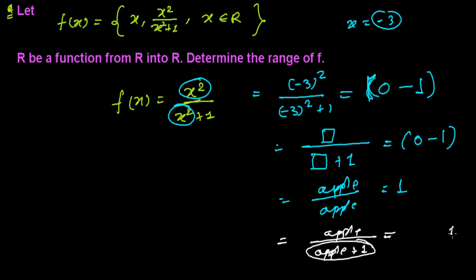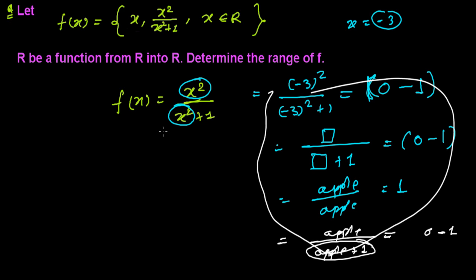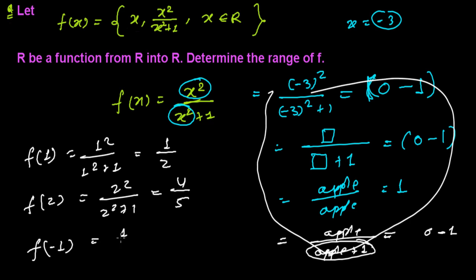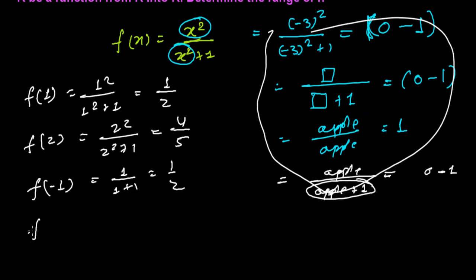So it will always be between 0 and 1. Let's solve it properly. If I put x = 1, I get 1² / (1² + 1) = 1/2. If I put x = 2, I get 2² / (2² + 1) = 4/5. If I put x = -1, then (-1)² = 1, so it's 1/2 again. If I put x = 5, I get 25/26. Every time the result is less than 1.